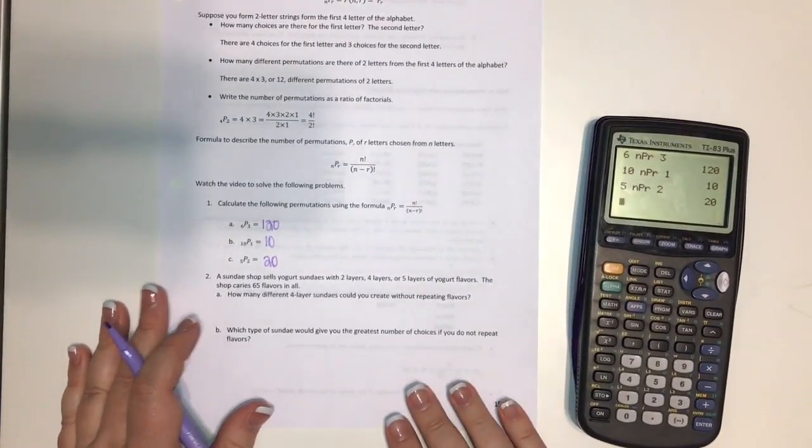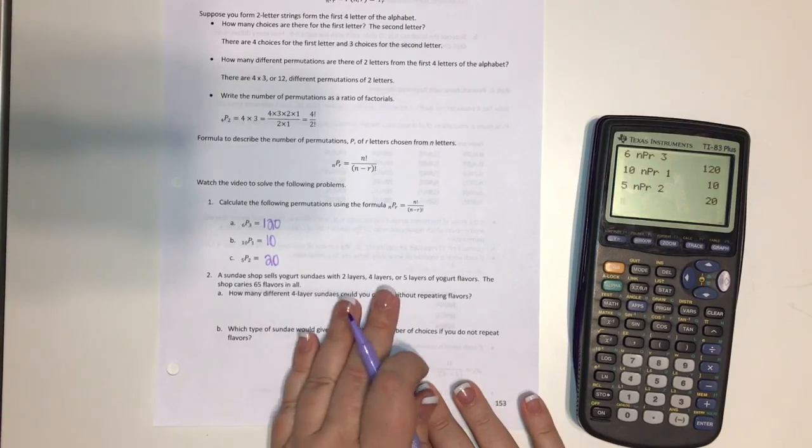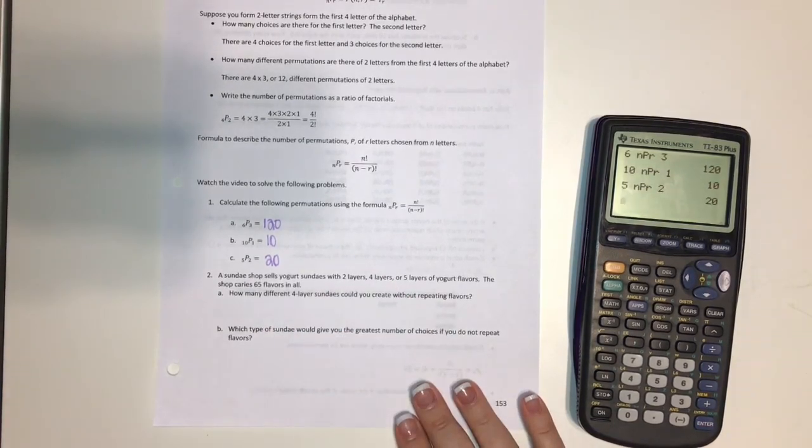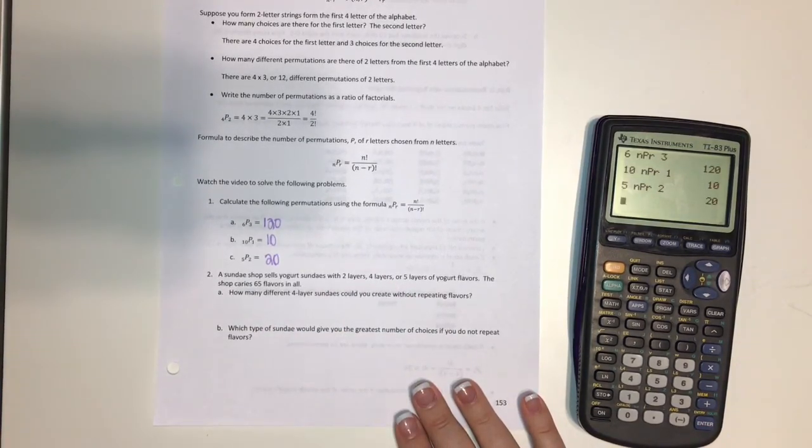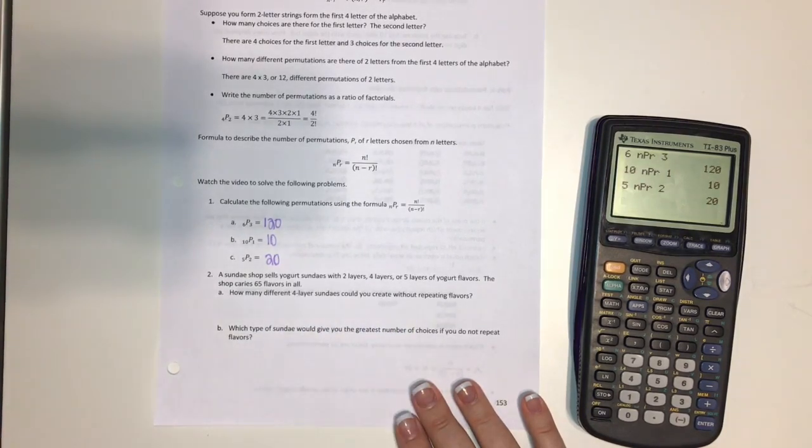So now we have a real problem to work through. A sundae shop sells yogurt sundaes with two layers, four layers, or five layers of yogurt. The shop carries 65 flavors in all. How many different four-layer sundaes could you create without repeating flavors?